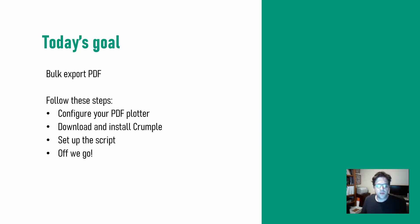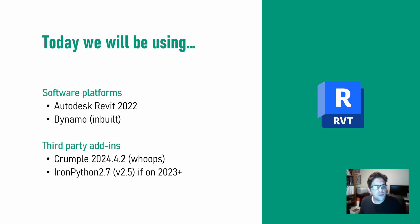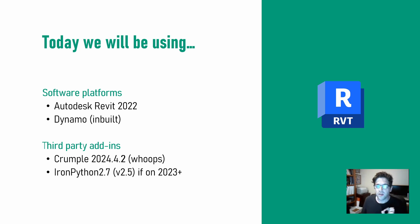From there we're going to be using the Crumple package, so if you haven't already installed it you will need to do so. From there we'll set up a script and we'll finally execute a bulk print. Today I'll be using Autodesk Revit 2022 with its inbuilt Dynamo version.